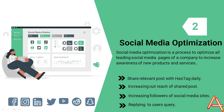The second strategy for SMO is to increase the outreach of shared posts. This means sharing your posts on multiple social media platforms and engaging with your followers on each platform. One way to increase outreach is to cross-promote posts on different platforms — for example, you can share a post on Instagram and then share it again on Twitter, Facebook, and LinkedIn. This will ensure that your post is seen by a wider audience and increase its overall reach.